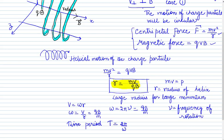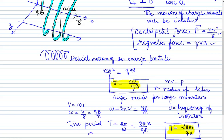All physics students are familiar from previous classes that T equals 2 pi upon omega. Putting in the value of omega equal to qB upon m, we get T equal to 2 pi m upon qB. That is the relation for the time period. The frequency and time period are inversely related, so T equals 1 upon nu. Another important quantity we have to calculate is the distance travelled in one rotation, which is known as the pitch.